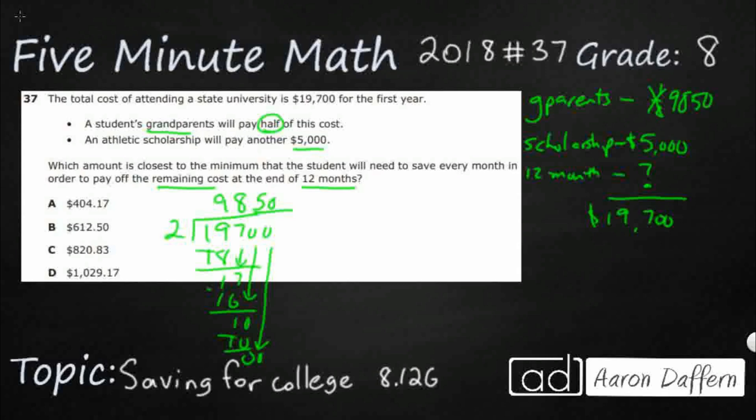Alright, so now we've got two numbers here. So what we could do is let's add our $9,850. Let's add that scholarship for $5,000. And let's see how much actual money is being paid so far or being saved, I guess. So that's $14,850. That's what these two equal, $14,850.